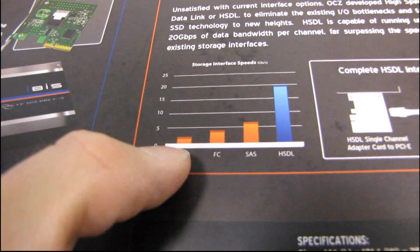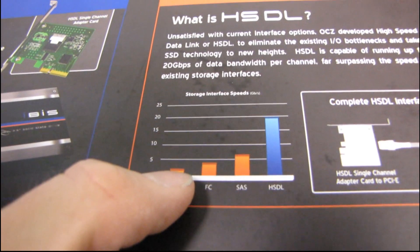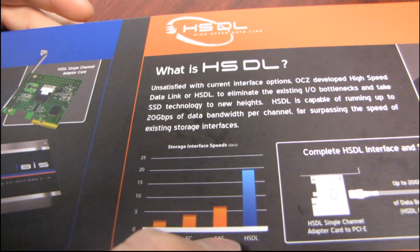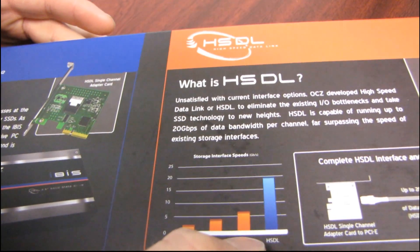SATA is 3 gigabit per second. And then SAS is up to about 6 gigabit per second right now.